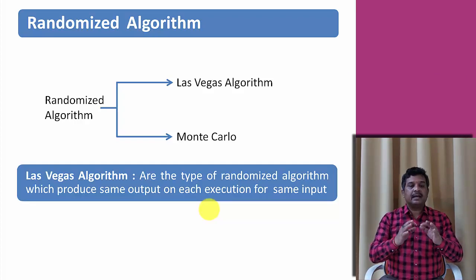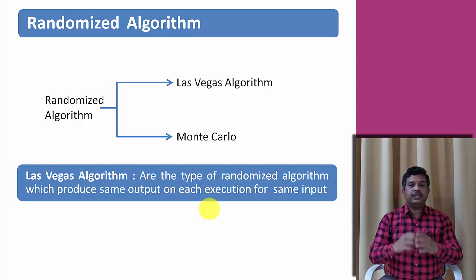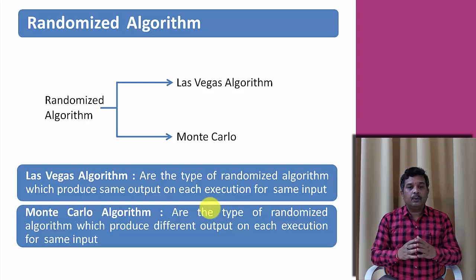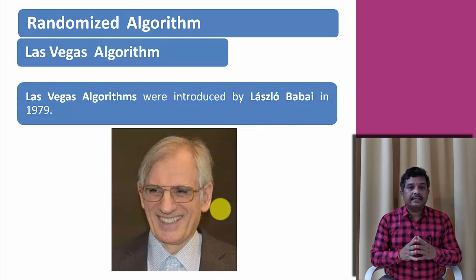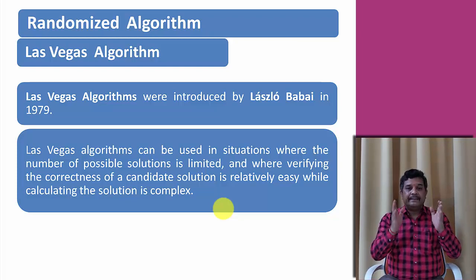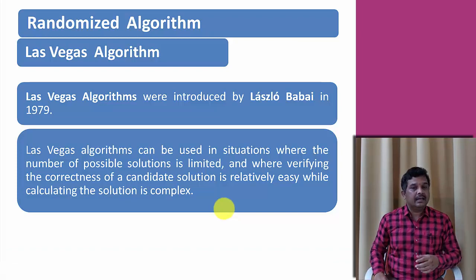Las Vegas algorithms are the type of randomized algorithm which produce the same output on each execution for the same input. Monte Carlo algorithms are randomized algorithms which may produce different output on each execution for the same input. Las Vegas algorithm was introduced in 1979 and can be used in situations where the number of possible solutions is limited and where verifying the correctness of a candidate solution is relatively easy while calculating the solution is complex.